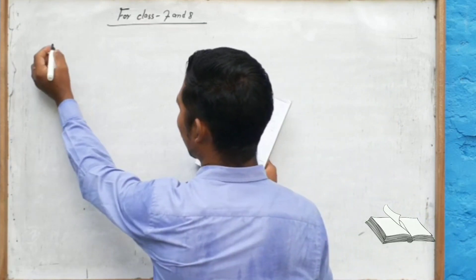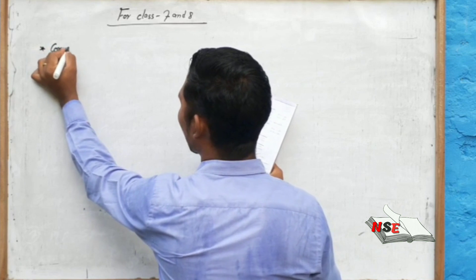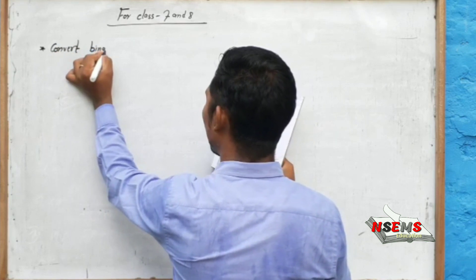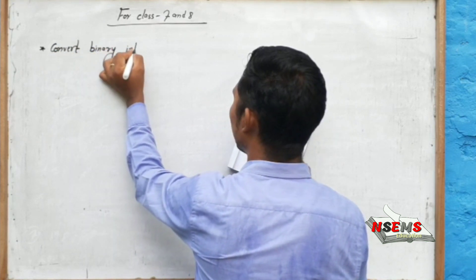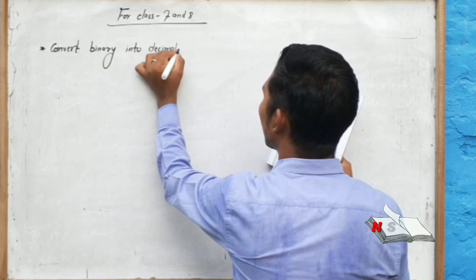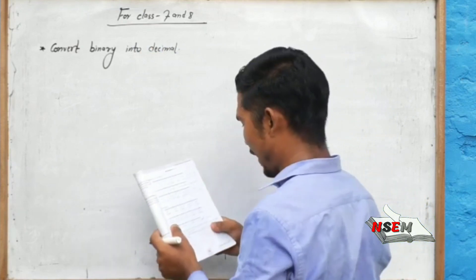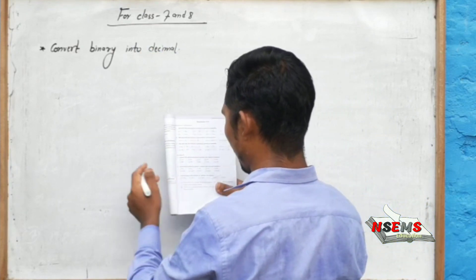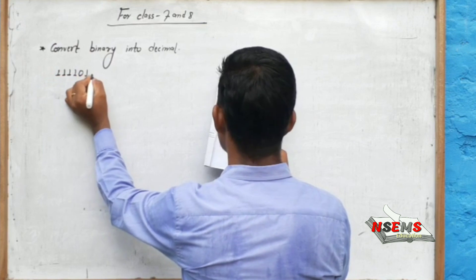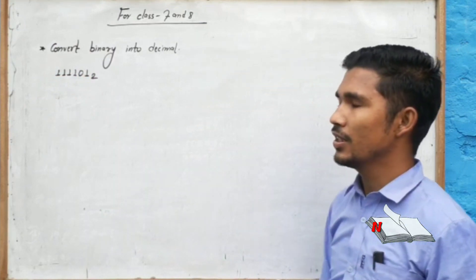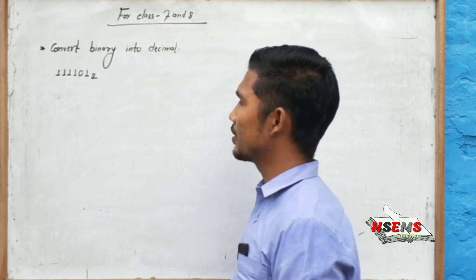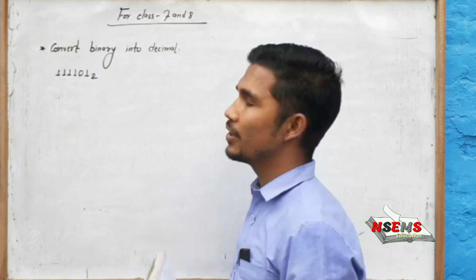For the first time, what do we do? We will convert binary into decimal number. The question is 111101. We will get the question 111101 and the base is 2.